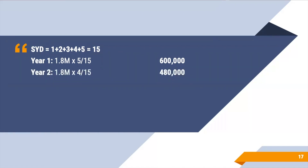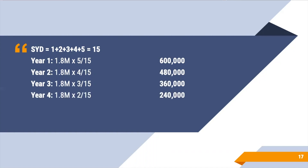For year three: 1,800,000 times 3/15 equals 360,000 pesos. For year four: 1,800,000 times 2/15 equals 240,000 pesos. And for year five: 1,800,000 times 1/15 equals 120,000 pesos. If you add all depreciation expense for five years, the total is still 1,800,000. Notice that from year one to year five, depreciation is declining — higher depreciation during the earlier years. That's the SYD or sum of the years digit method.